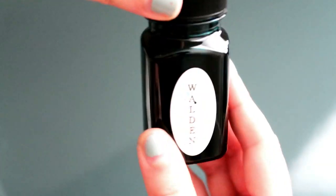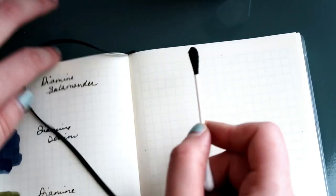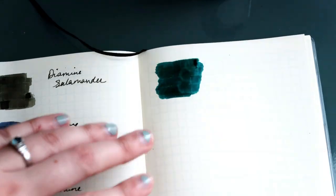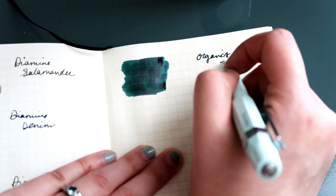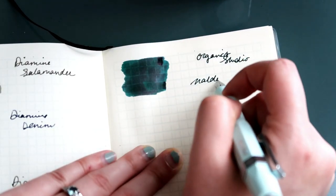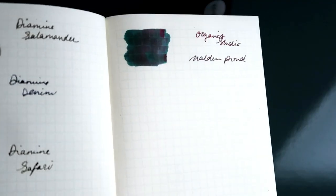Next up has to be my all-time favorite at the moment, Organic Studio's Walden Pond. It is this beautiful teal color with a sheen to it. So pretty and so fun to write with. I keep it in my Kaweco Sport all the time.